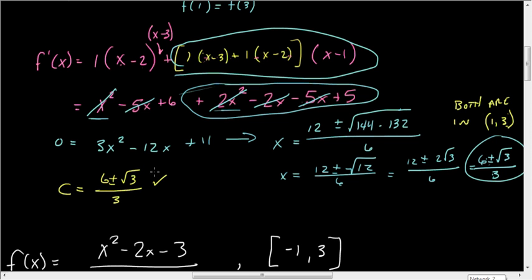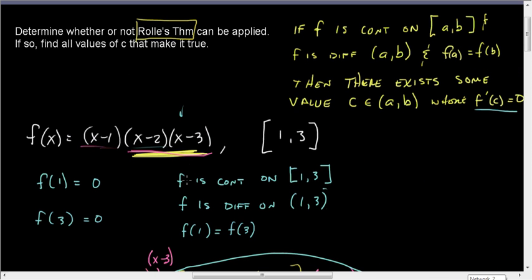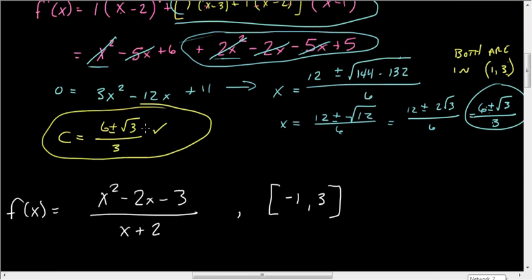So again, let's recap. We tested whether f is continuous on the closed interval. We tested whether f is differentiable on the open interval. And then we found the endpoints, the y-values of the endpoints, and tested to make sure they were the same. So we could apply Rolle's Theorem. And then all we did was set the derivative equal to 0 and solve for x. And that's what gave us our answer. Let's go ahead and stop here, and we'll pick up a second video with this next problem.